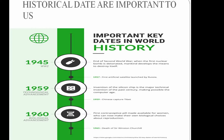Similarly, while writing history we consider dates that are related to a set of crucial events of our study. For example, the year 1526 CE is vital in the political history of the Mughals because it is linked with the foundation of the Mughal Empire in India. All other dates associated with important battles fought by the Mughals are also considered important. Therefore, an event makes a date important.